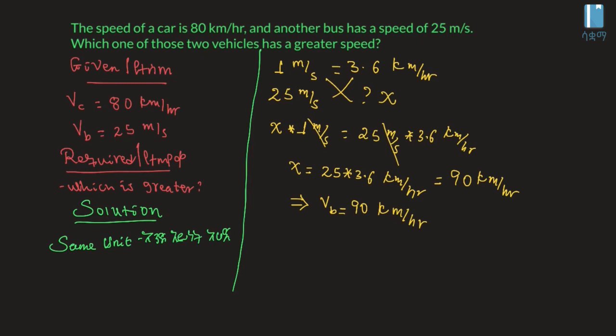vc and vb are now in the same unit, km per hour. vc is equal to 80 km per hour, and vb is equal to 90 km per hour.